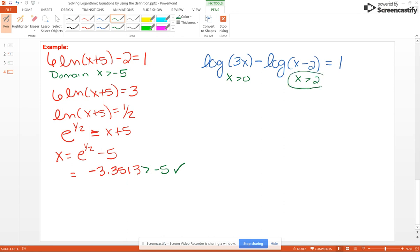I have two log terms here. So what I need to do is use the quotient rule for logarithms to bring this together and make one log term. So we're going to have common log of 3x over x minus 2 equal 1.